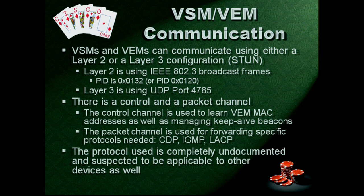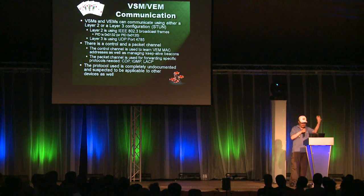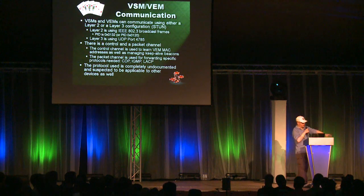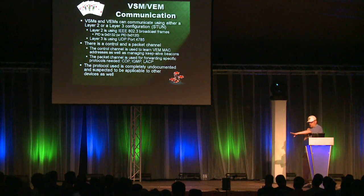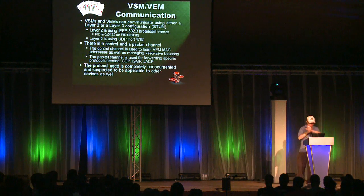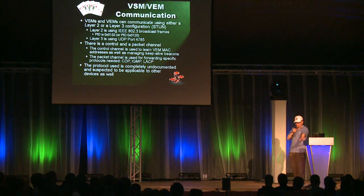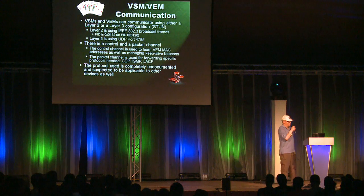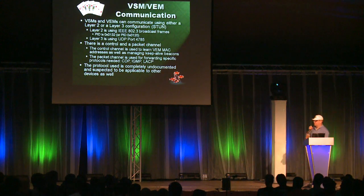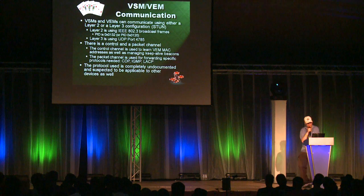There's also a Layer 3 version needed for the hipster cloud SDN configuration, which talks UDP. Over that runs the control channel — you need to control your line cards, say this is the new MAC table, who you talk to, etc. And there's a packet channel where they transport very important packets — not all packets, just CDP, IGMP, and LACP, but mostly CDP.